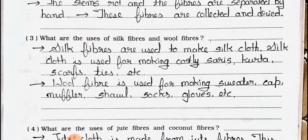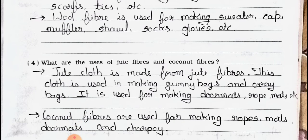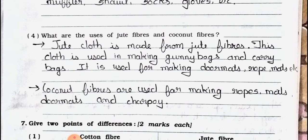Question number three: What are the uses of silk fibers and wool fibers? Answer: Silk fibers are used to make silk cloth. Silk cloth is used for making costly saris, kurtas, scarves, ties, etc. Wool fiber is used for making sweaters, caps, mufflers, shawls, socks, gloves, etc.